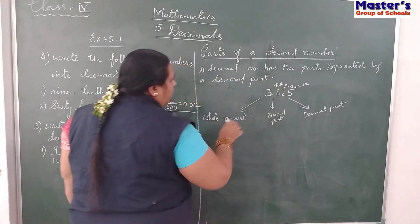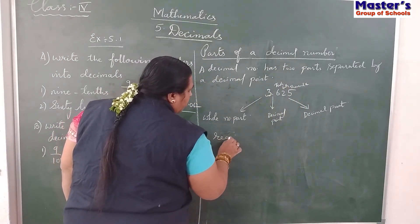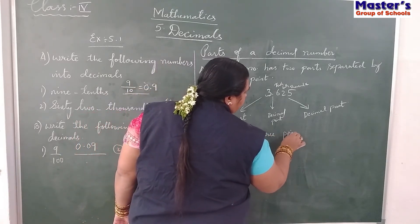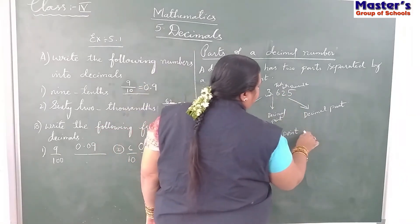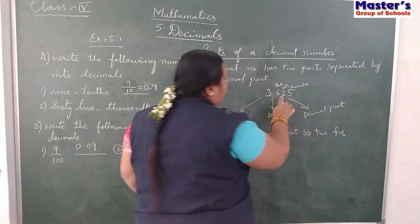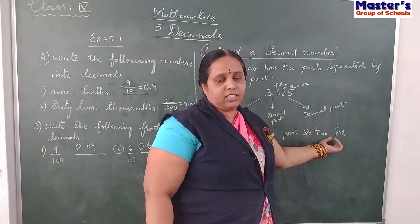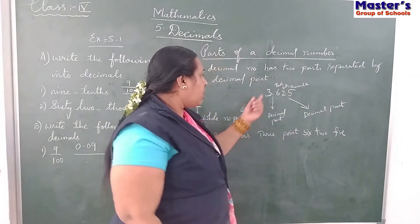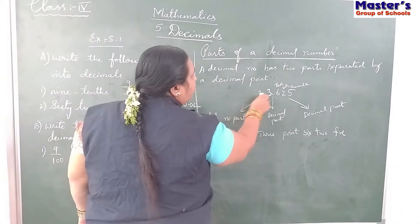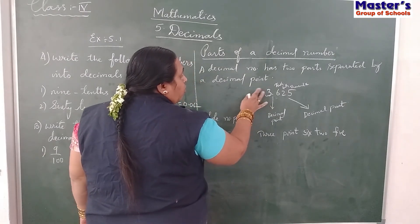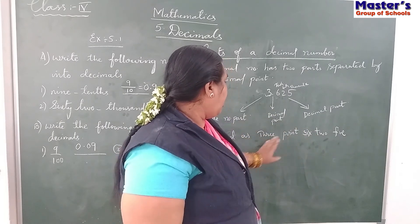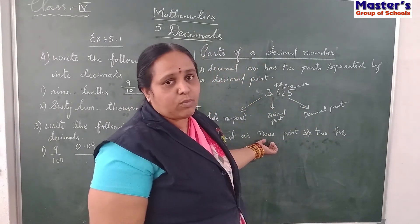And how do you read this one? See here - 3, you have to read as 3 point. Don't read 625 together. You have to read 6, 2, 5 separately. After the point, each number you have to read separately. Before the point, read the complete whole number - so 3 point. Instead of 3, if you have 2, 3, you can read it as the whole number. But after the point, you have to read each digit separately. For example, 3.625 - this is the way to read the decimal number.